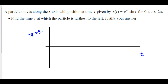A particle moves along the x-axis with position at time t given by e to the negative t sine t, from 0 to 2pi. Find the time t at which the particle is farthest to the left and justify your answer.